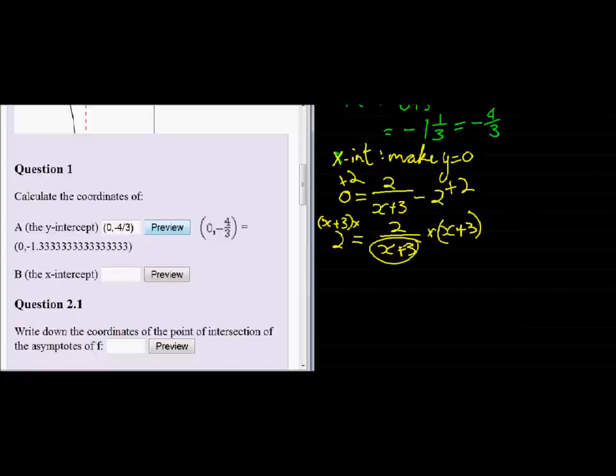On the left side, the 2 gets distributed, so we get 2x + 6. On the right side, it cancels to leave just 2. Subtracting 6 from both sides gives 2x = -4.